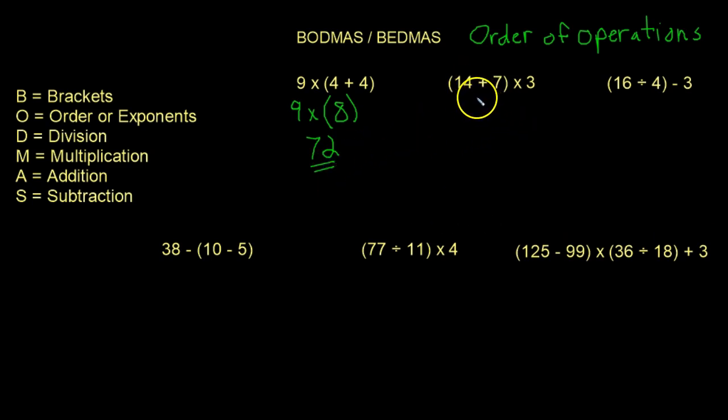Let's have a look at this one. This one is 14 plus 7 multiplied by 3. So 14 plus 7, well if you know your times tables or your multiplication tables, you should know that that's 21. And then we just write multiplied by 3. So 21 multiplied by 3 is going to be 63. Easy peasy.